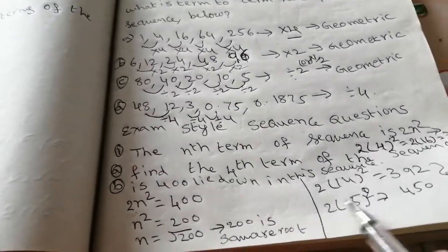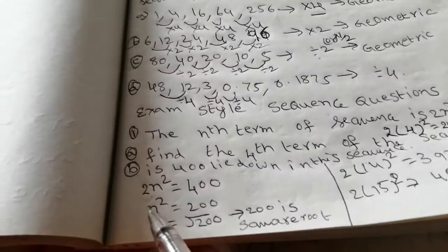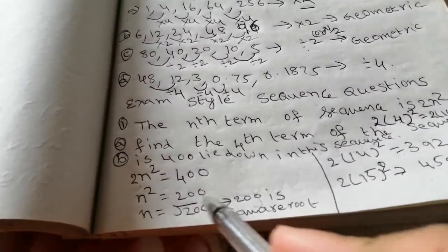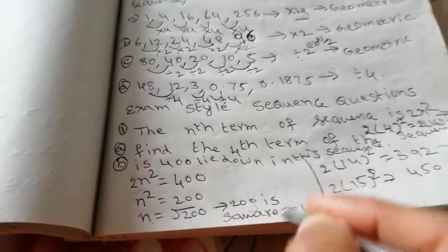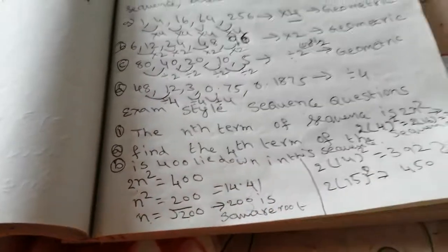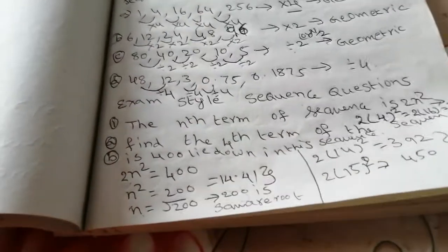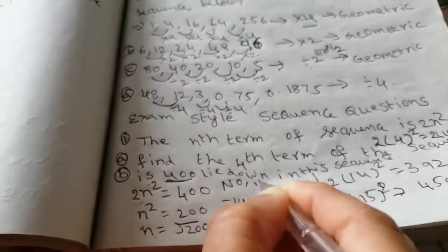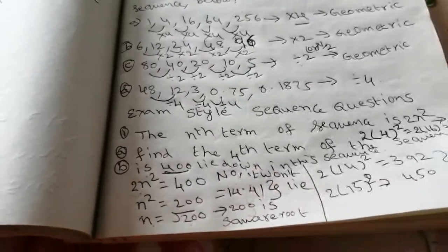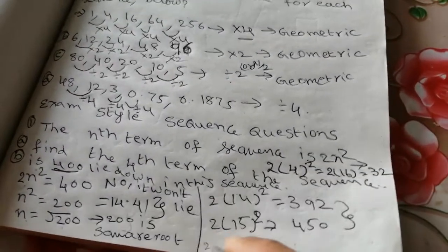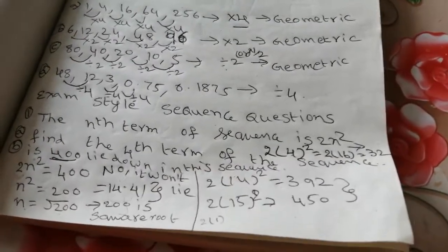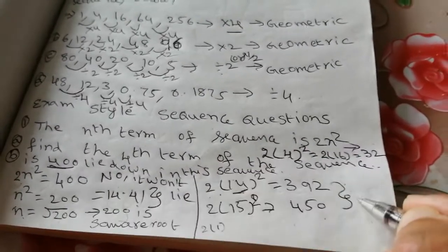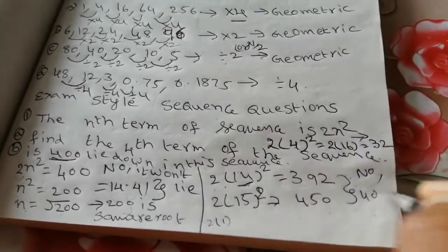Is 400 in this sequence? There are two methods. Method one: set 2n² = 400, so n² = 200, and n = √200, which gives a decimal. When you get a decimal answer, 400 does not lie in this sequence. Method two — manually: the 14th term is 392 and the 15th term is 450. That means 400 won't lie in this sequence.